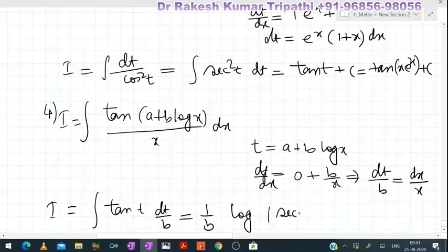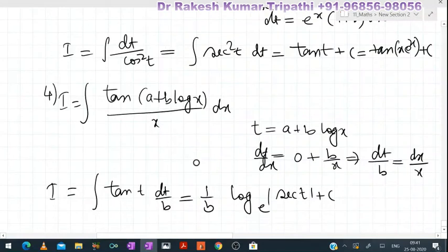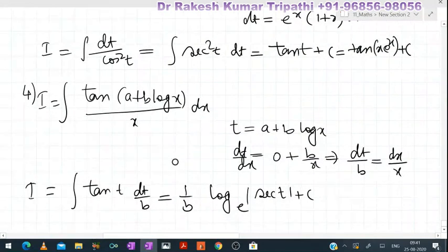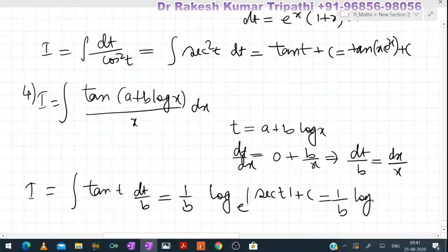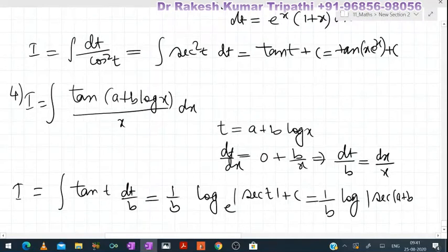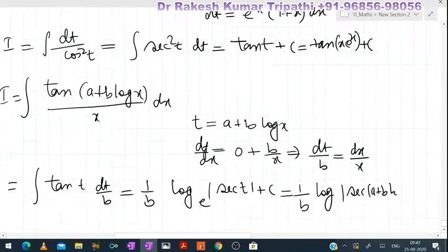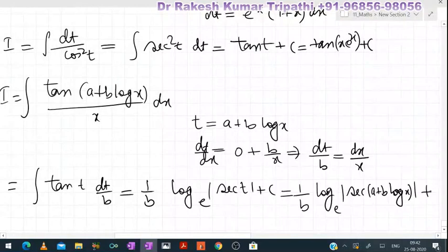So the result is (1/b)·log|sec(t)| + C. If c is already used in the question, we replace the constant with k or p or anything else. Substituting back t = a + b·logx, the final answer is (1/b)·log|sec(a + b·logx)| + C. This is the integral of this kind of function.